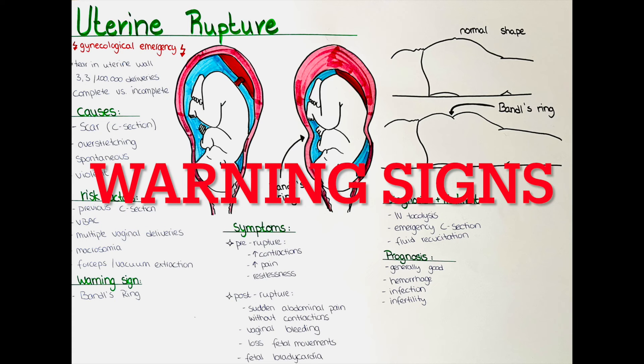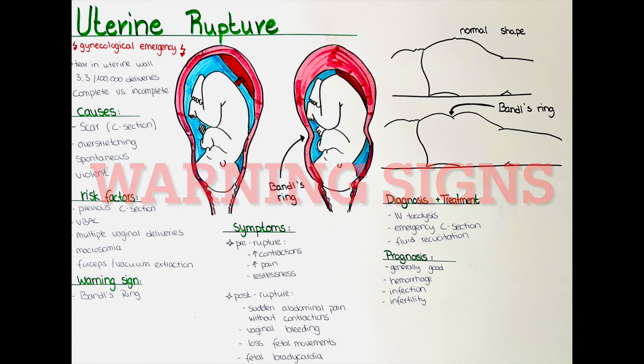What are the warning signs of a uterine rupture? Warning signs of uterine rupture are signs that a uterine rupture might be about to occur.